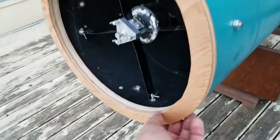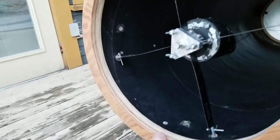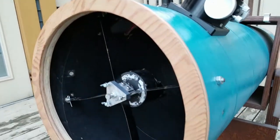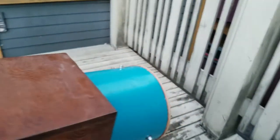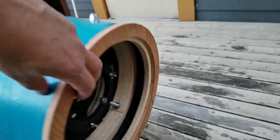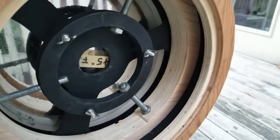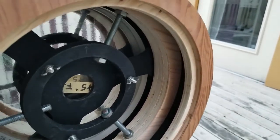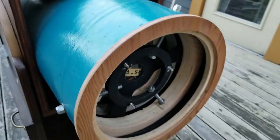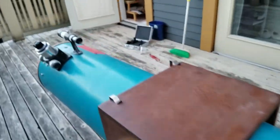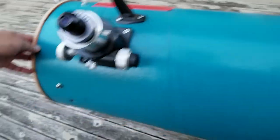Okay, so we have managed to put on, at least to dry fit, the front tube ring, back tube ring, as well as remount the mirror in its new cell. Dry fit, nothing's permanent at this point. I have collimated it, and it seems to be producing a reasonable image.